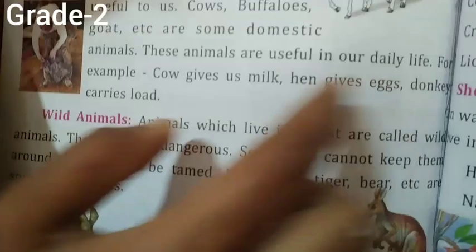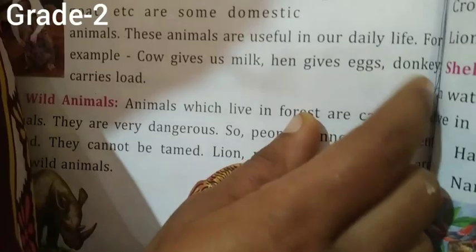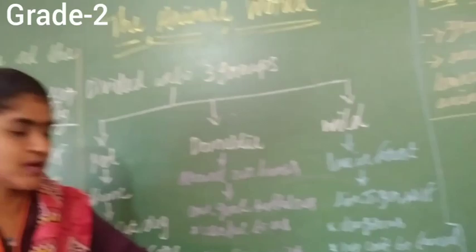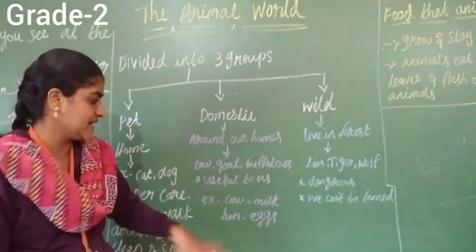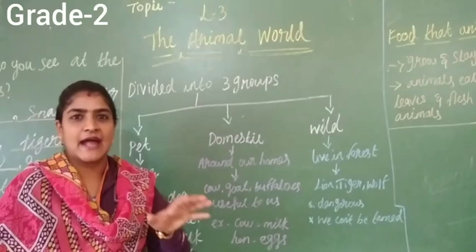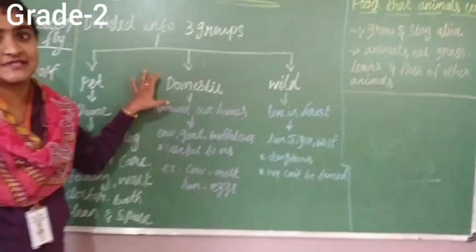Cow gives us milk; hen gives eggs; donkey carries a load. The cow, buffalo, and goat give milk. The hen lays eggs, which are useful in our daily life. Street dogs bark when strangers come, giving us a signal. Also, if there are many rats in the house, we can let a cat stay for a day or two and all the rats will run away. Various types of helpfulness come from domestic animals.